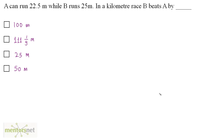A can run 22.5 meters while B runs 25 meters. In a kilometers race, B beats A by how many meters? When B runs 25 meters, A runs 22.5 meters. We have been asked by how many meters does B beat A in a kilometer race.